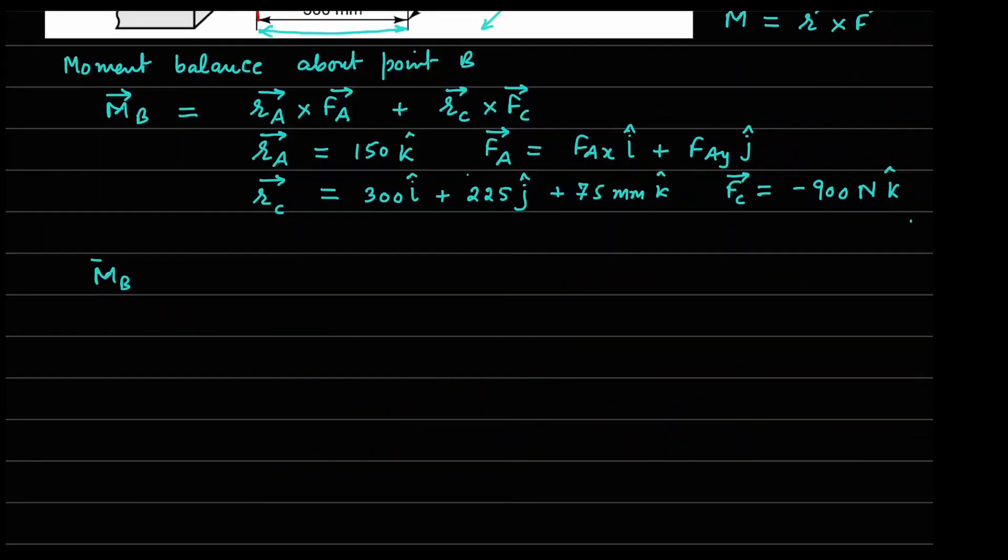So now if you do this, the cross product can be written in the matrix format, i cap, j cap, K cap. Similarly, for this point C, I can write i cap, j cap, K cap.